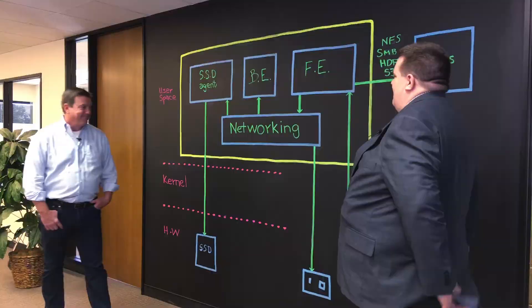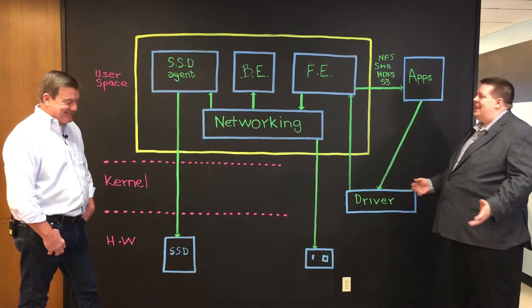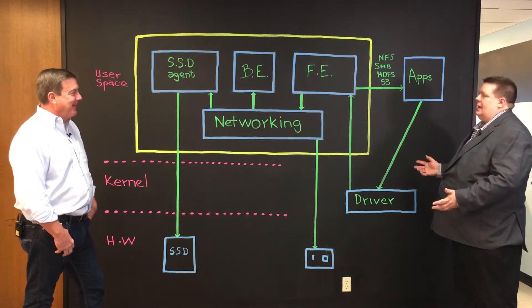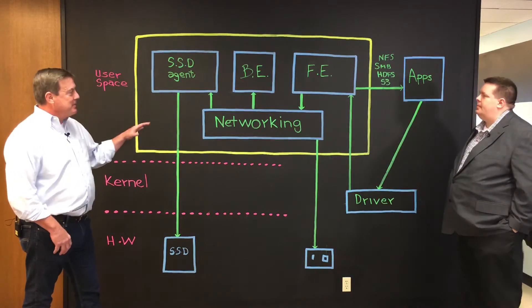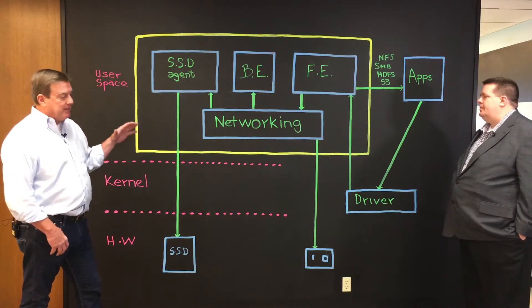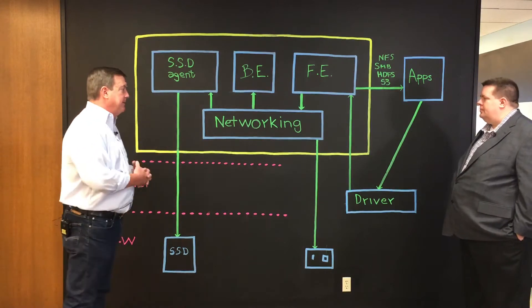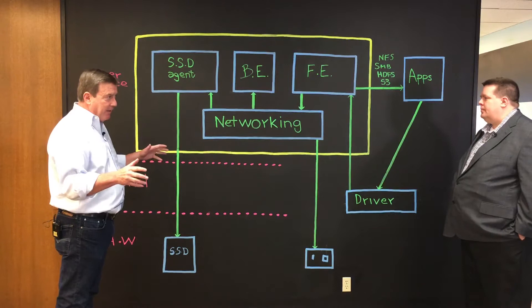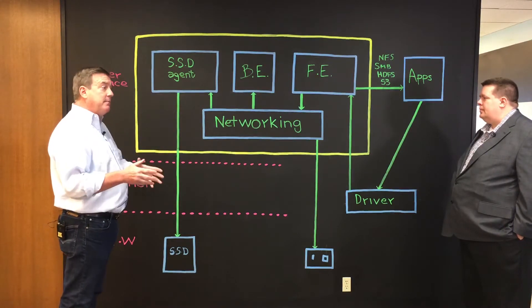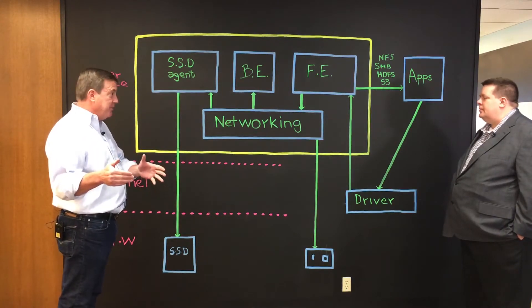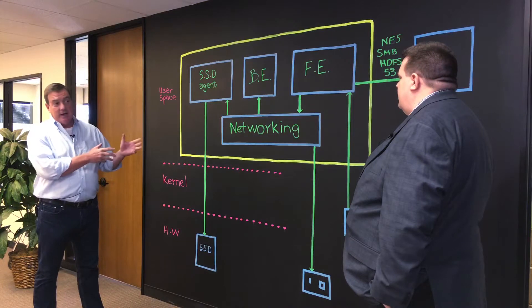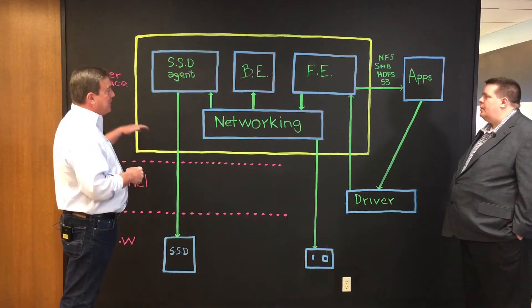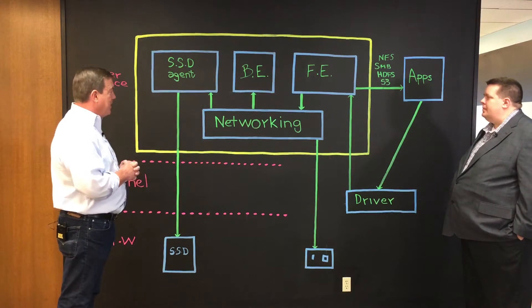That fits well, particularly when we look at the architecture on the board behind us. This is an architectural diagram of our software. Weka is a software-only solution — effectively a POSIX file system, fully shareable. It was built from the ground up with a lot of patents around the technology. Inside the yellow box are the components that make up the Weka architecture.